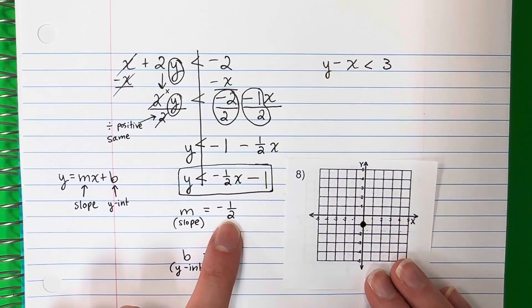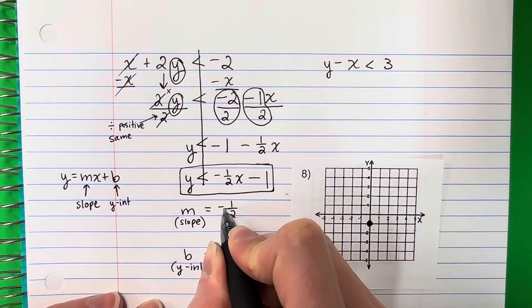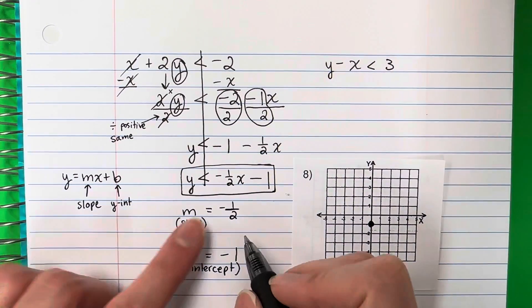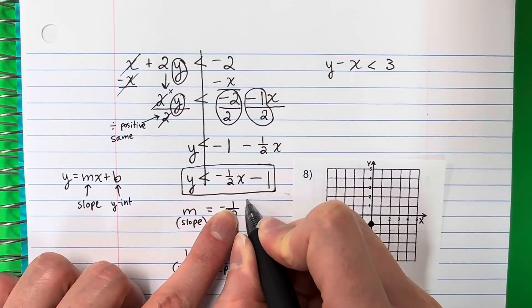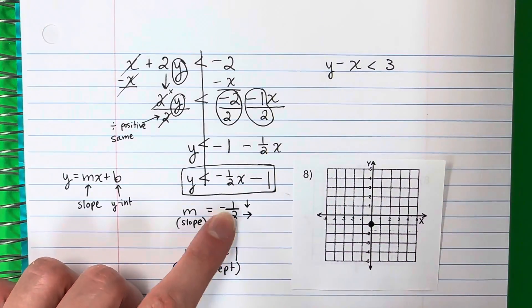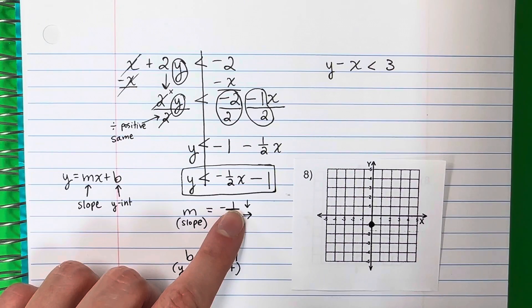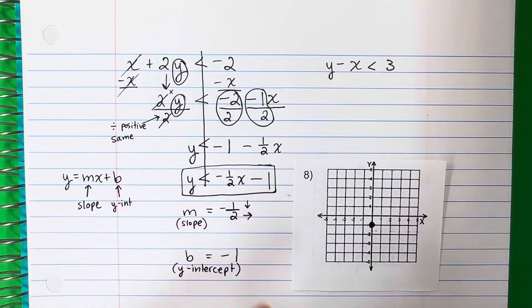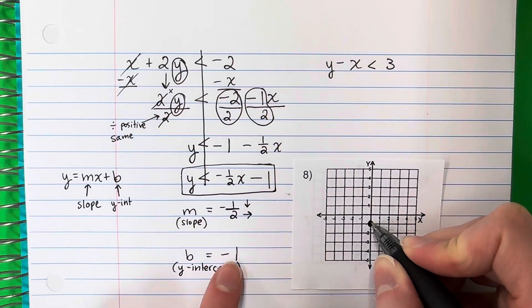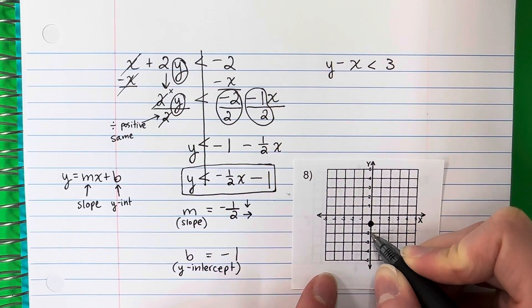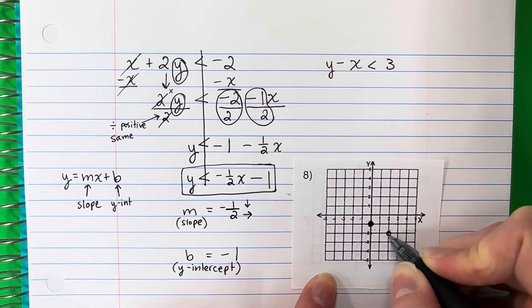And then the slope is negative 1 half. So this is going to be rise over run. So negative 1, that means you will go down. And this number you always go right. So you're going to start here at the negative 1, you're going to go down 1 and 2 to the right. 1, 2. Here's your point.